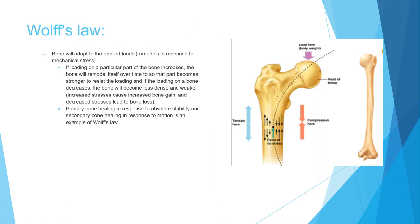Wolff's law states that bone adapts to applied stress: areas of increased stress develop denser bone, while areas of decreased stress develop less dense bone. For example, areas under compression or tension stress will become stronger, while the area in the middle receiving minimal stress will become weaker and less dense.